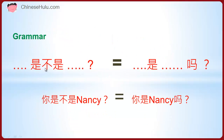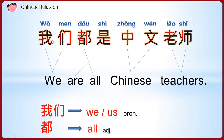Now for the grammar: 是不是 — positive verb and negative verb put together — makes a question sentence. This is equal to using just 是 with 吗 at the end. For example, 你是不是 Nancy? — are you Nancy? — is equal to 你是 Nancy 吗? You delete the 不是 and put 吗 at the end. Both mean: are you Nancy?